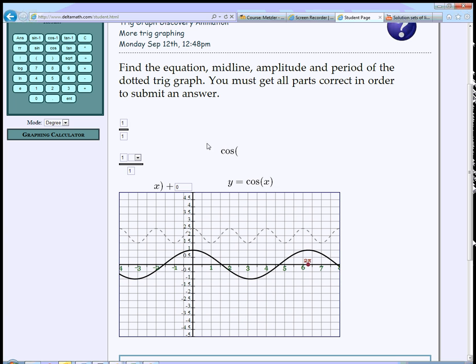This is the a, so some number in front of the cosine. Then here's the b in front of the x. And again, you have a choice for pi or not pi. And then a shift.